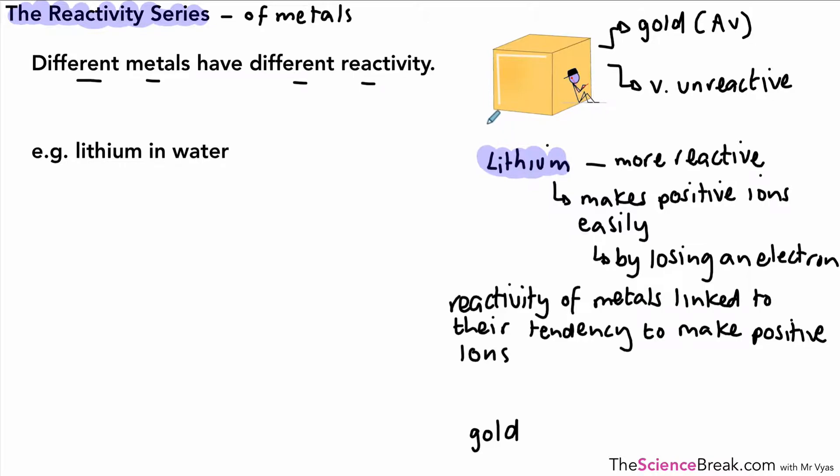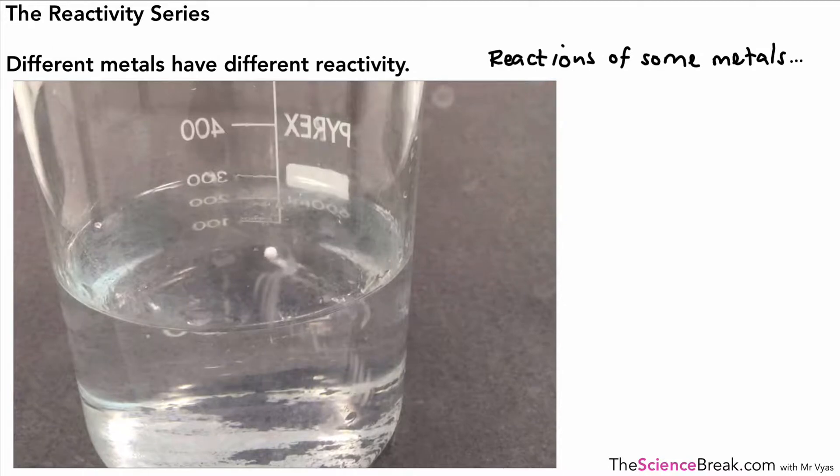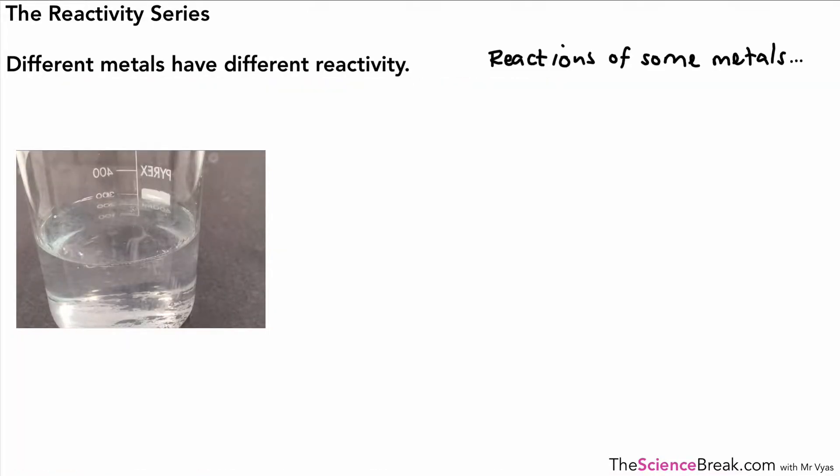Lithium would be higher up compared to gold, which would be very far down if we had the most reactive metals at the top. Now we could look at the reactions of some more metals in water. The first one we've done already was lithium from group 1. As a reminder, it floats on the water, makes a ball, floats around, produces hydrogen gas, and makes the water alkaline. That's why it's an alkaline metal.